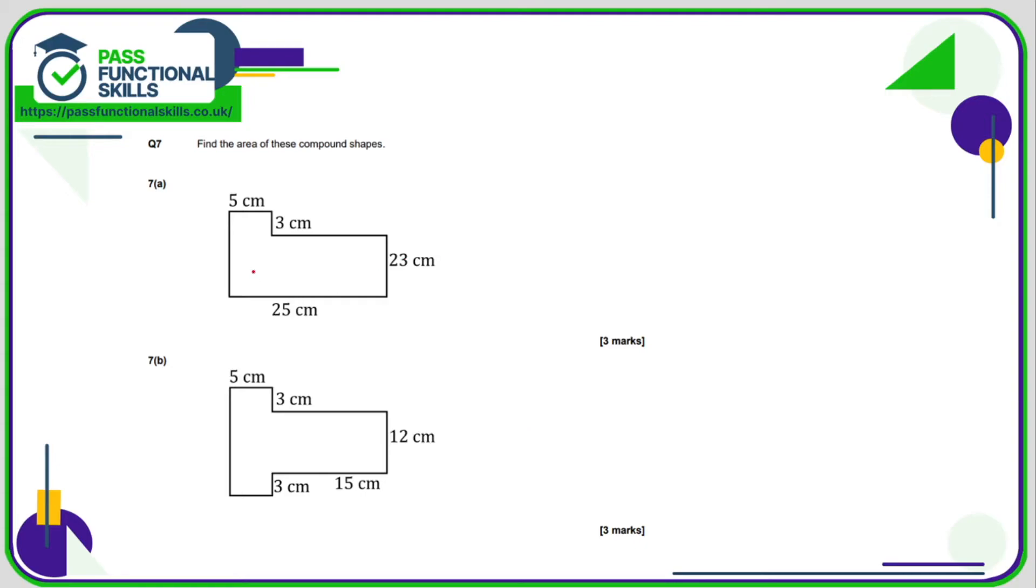Question seven. Again, we can use a calculator. I'm going to split this into two rectangles here because that way I don't need to figure out any side lengths. This is 15 square centimeters, 5 times 3. And 23 times by 25 is 575 plus the 15. So in total, that is 590 square centimeters.